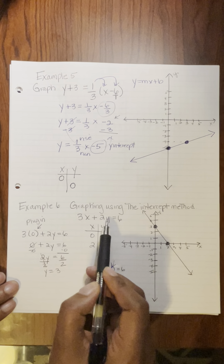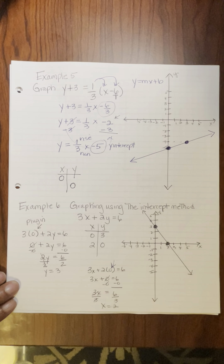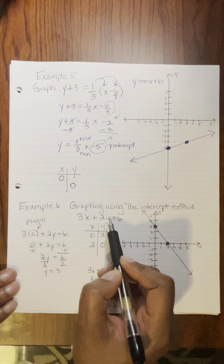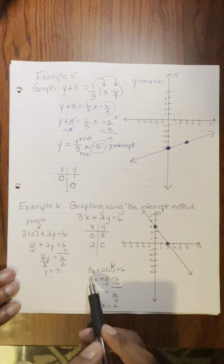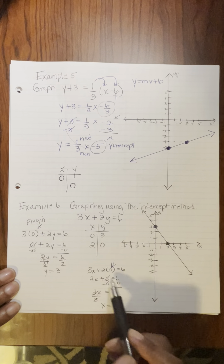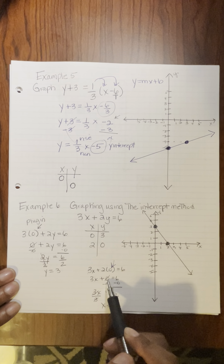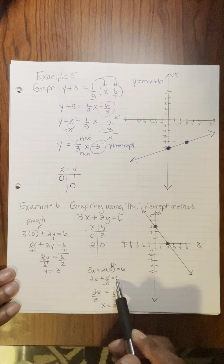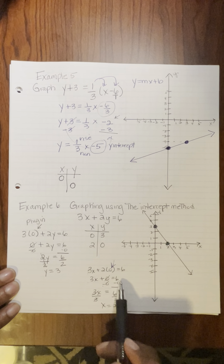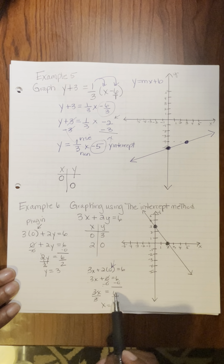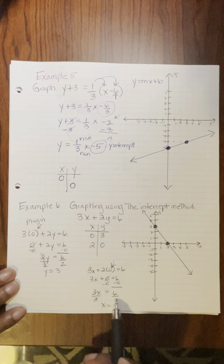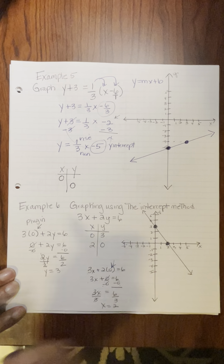Next, instead of plugging 0 in for x, let's plug 0 in for y and see what we get. I left 3x alone and plugged 0 in for y: 2 times 0 is 0, equals 6. I subtracted 0 from both sides — 6 minus 0 is 6. Bring down your 3x, divide both sides by 3, and you have 2.